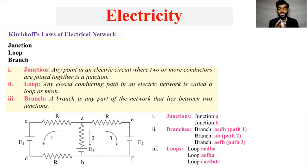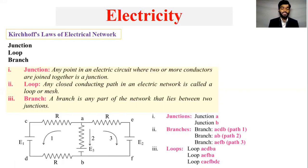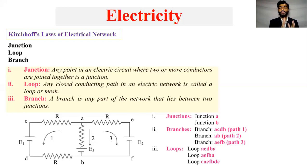Branch is any part of a network that lies between two junctions. So a branch connects two junctions in an electrical network.